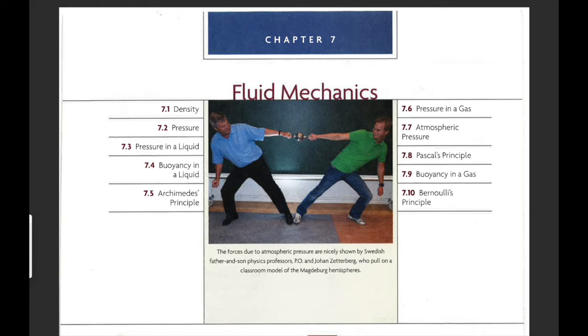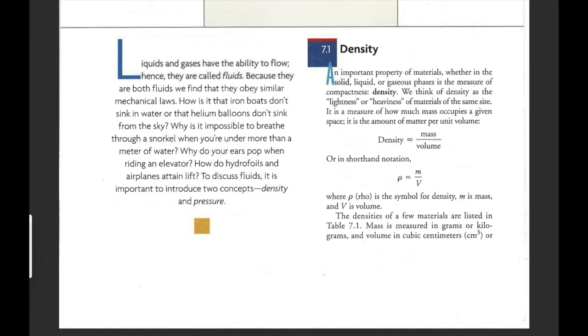All right class, I hope you guys are doing well. I just want to quickly go through chapter seven. Concepts you really should have mastered is density. Density is mass over volume. Mass is basically the weight, is related to the weight, or it is about the amount of substance.